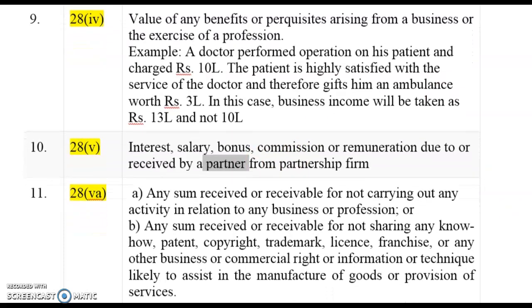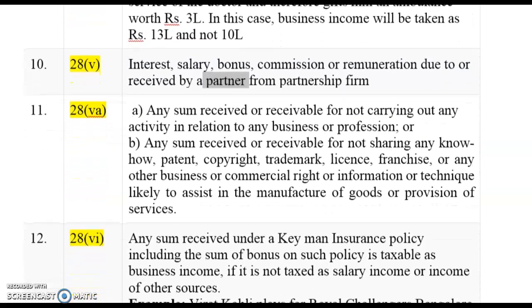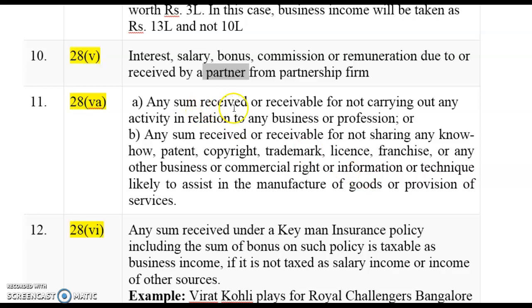Section 28(5)(a) covers any sum received or receivable for not carrying out any activity in relation to any business or profession, or for not sharing any know-how, patent, copyright, trademark, license, franchise, or any other business or commercial right or technical information. In short, if you receive any amount for agreeing not to do business or not to share your expertise, that amount is added back to your income.